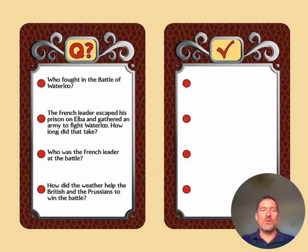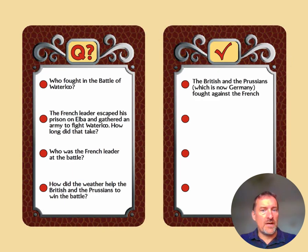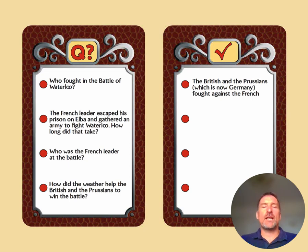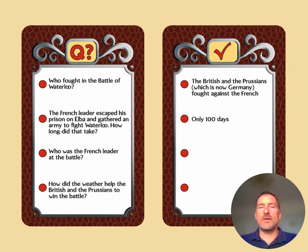Here are four questions about the Battle of Waterloo. Who fought in the Battle of Waterloo? The British and the Prussians — Prussia is now what we call Germany — fought against the French. The French leader escaped from prison on Elba and gathered an army to fight at Waterloo. How long did that take? Only 100 days — he brought together a massive army really quickly.